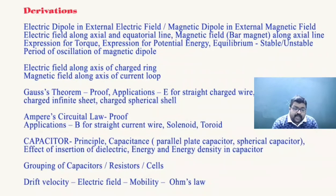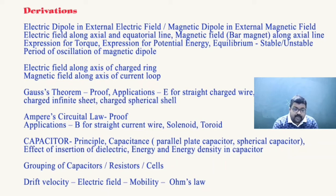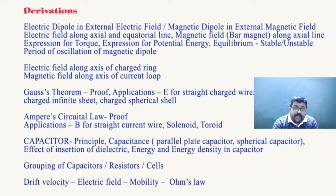Now derivations. Starting with the electric dipole and magnetic dipole. An electric dipole in an external electric field experiences a torque, and when you rotate the dipole work is done, which is stored as potential energy. Similarly, a magnetic dipole placed in a magnetic field experiences a torque; work done rotating it is stored as magnetic potential energy. If the dipole is slightly disturbed from stable equilibrium it starts oscillating — study the period of oscillation. Electric field along the axis of a charged ring and magnetic field along the axis of a current loop are almost identical derivations, so practice them together.